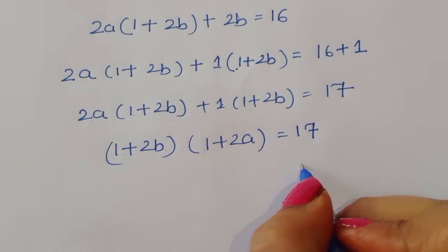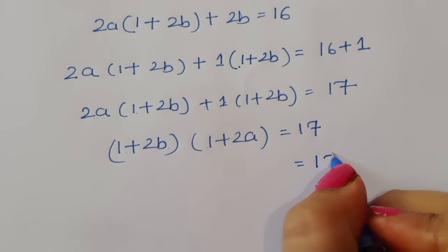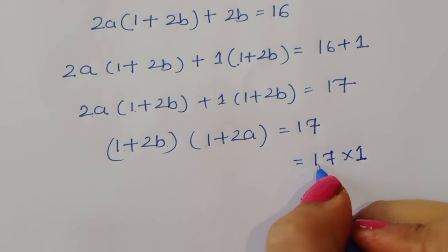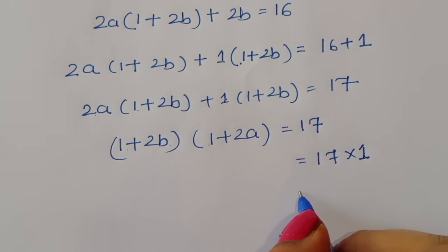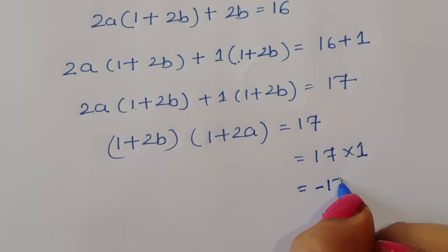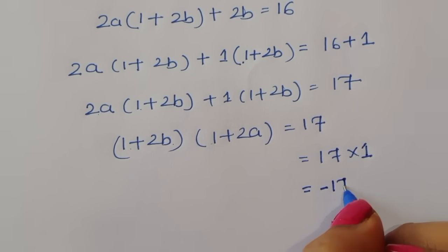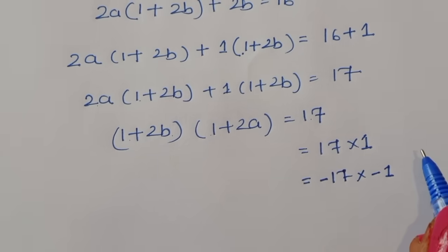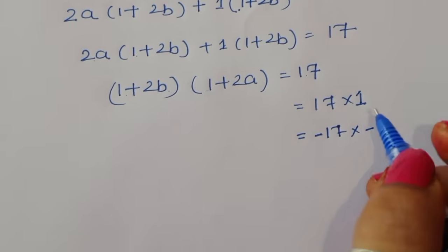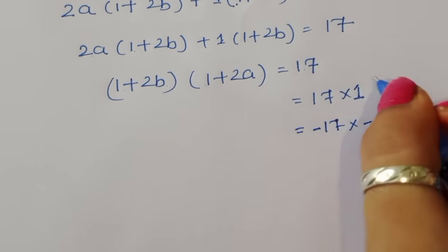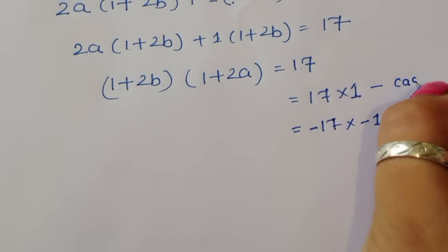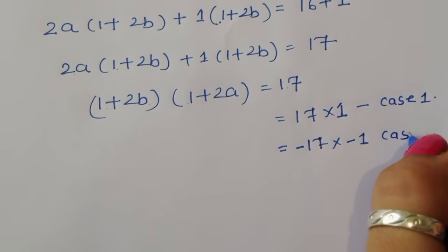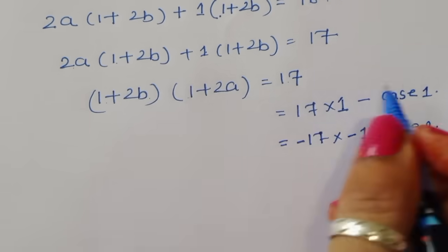The factors of 17 give us two cases: Case 1 is 17 × 1, and Case 2 is (−17) × (−1), since minus times minus gives plus 17.